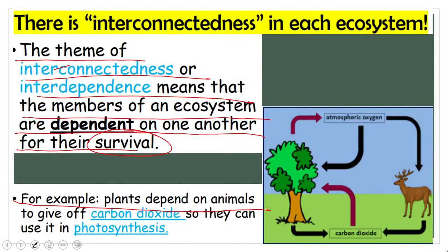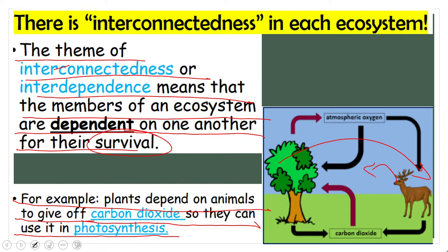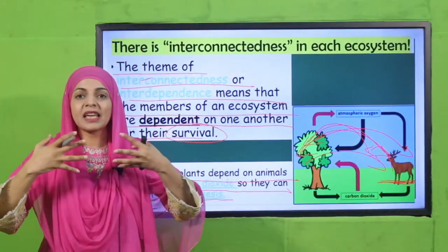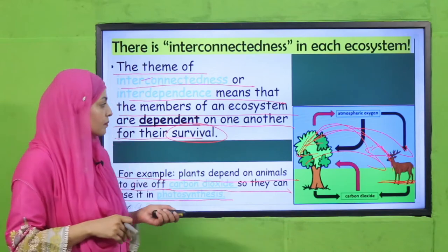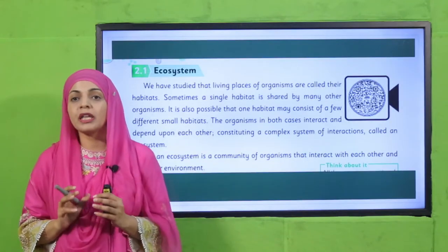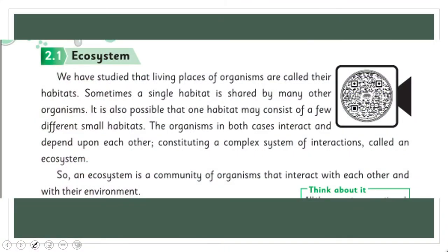For example, plants depend on animals to give off carbon dioxide, which plants use in photosynthesis. Animals breathe out carbon dioxide, and plants take it in. In return, the tree provides food and oxygen to the animal. You can see a circular connection forming between them — this interconnection is called an ecosystem.